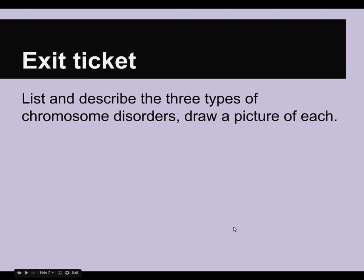Those are the three types of chromosome mutations we covered: deletion, inversion, and non-disjunction. Make sure you can describe them, name them, and drawing a picture of each will help you remember them. Thank you very much.